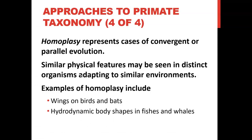Another example: squirrels and humans. Squirrels — fun fact — they have thumbs. Humans also have thumbs. Do we have a common ancestor? No, definitely not. Another example from the textbook: the hydrodynamic body shape in fish and whales. Fish and whales are not related — whales are actually mammals, more related to us than to fish. But because they both live in water, they developed the same body shape. That's what cladistic taxonomy is about: grouping animals based on derived and shared features.